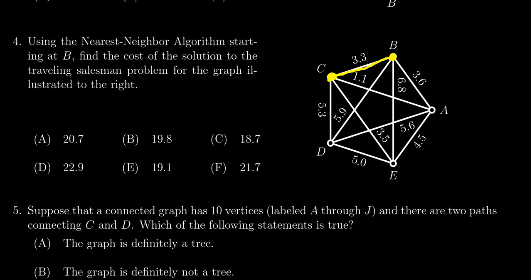Okay. Then we're at C. We can go to A for 1.1, we could go to E for 3.5, or we could go to D for 5.3. 1.1 is the nearest neighbor to C, so we're going to go there.